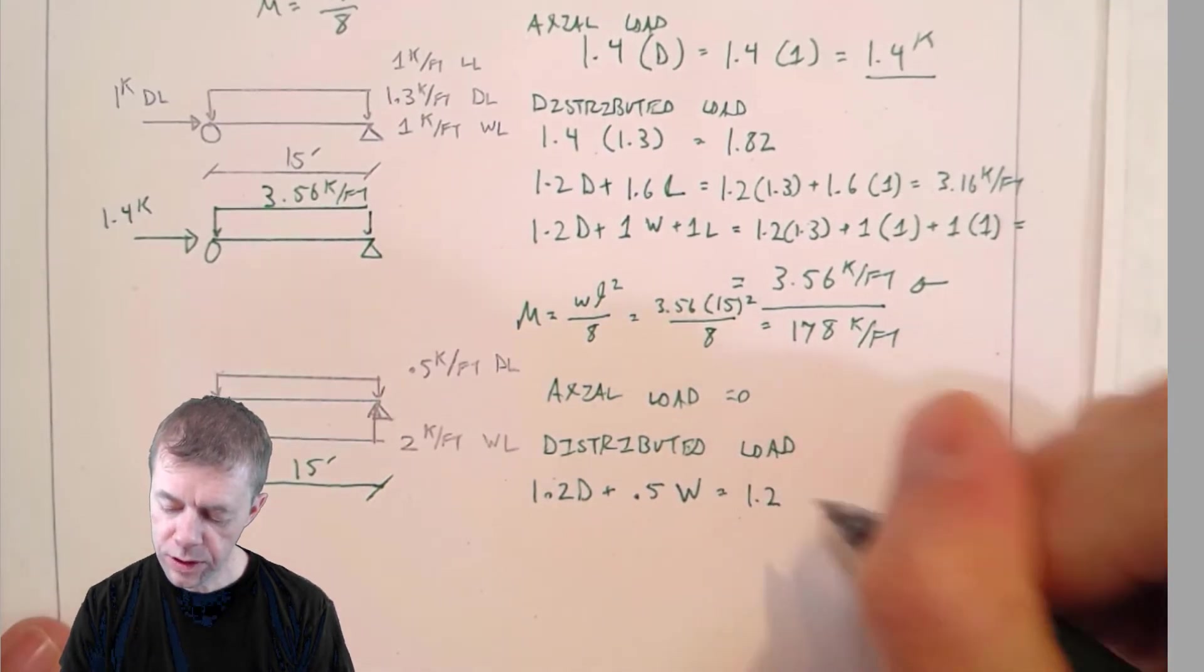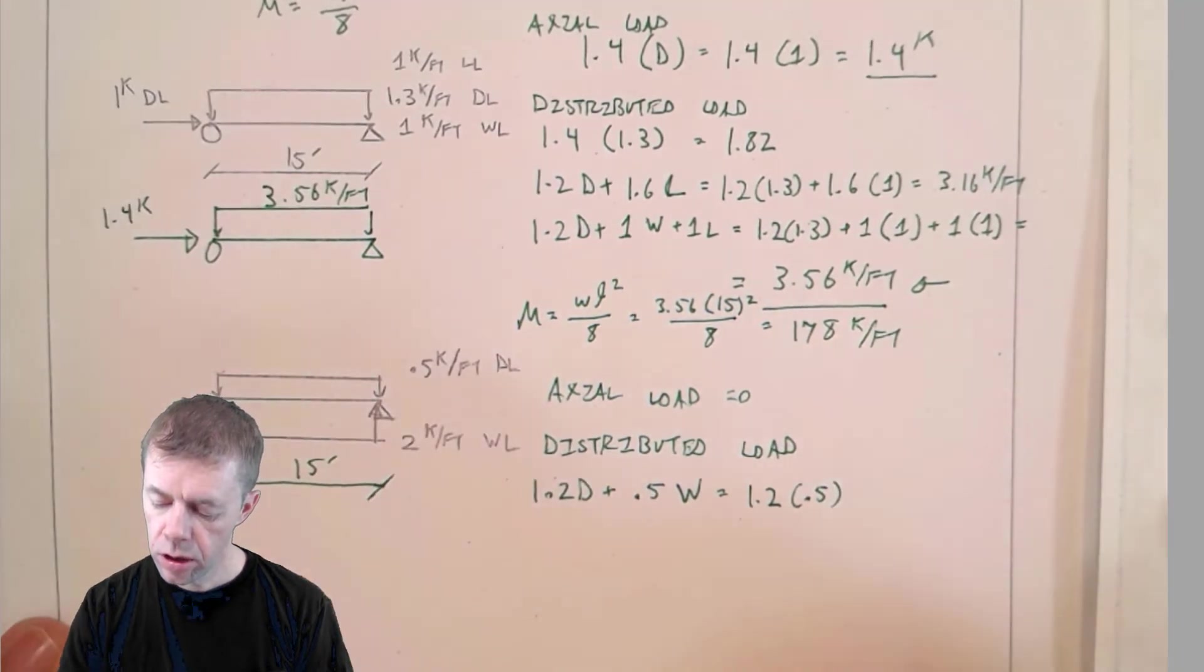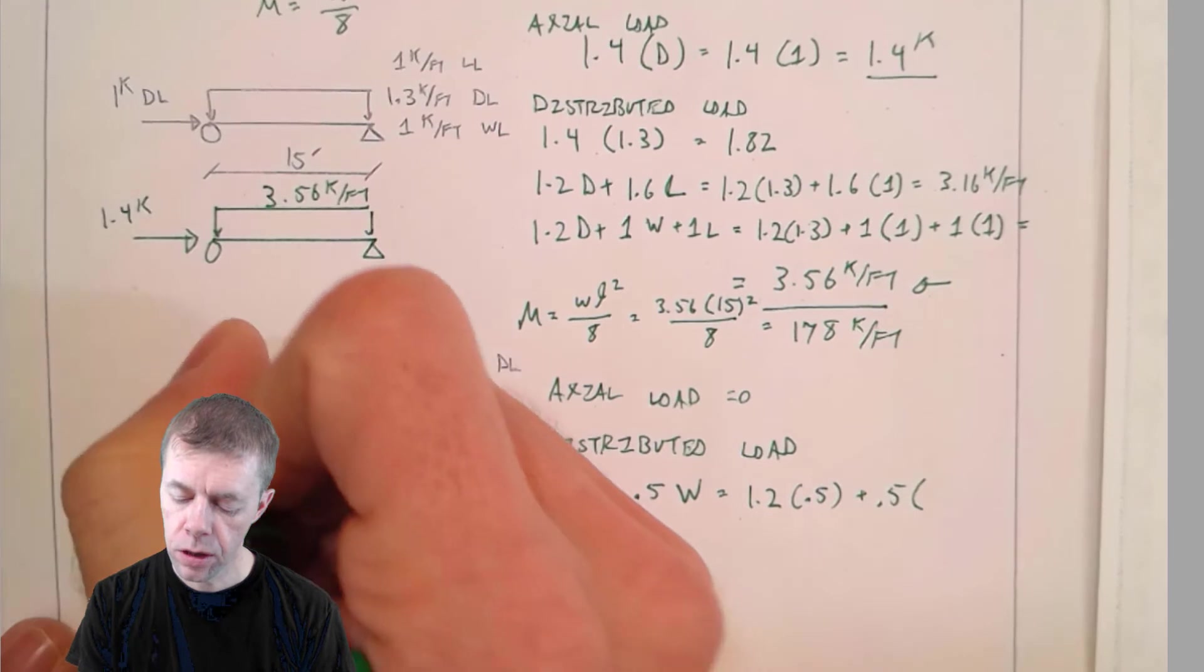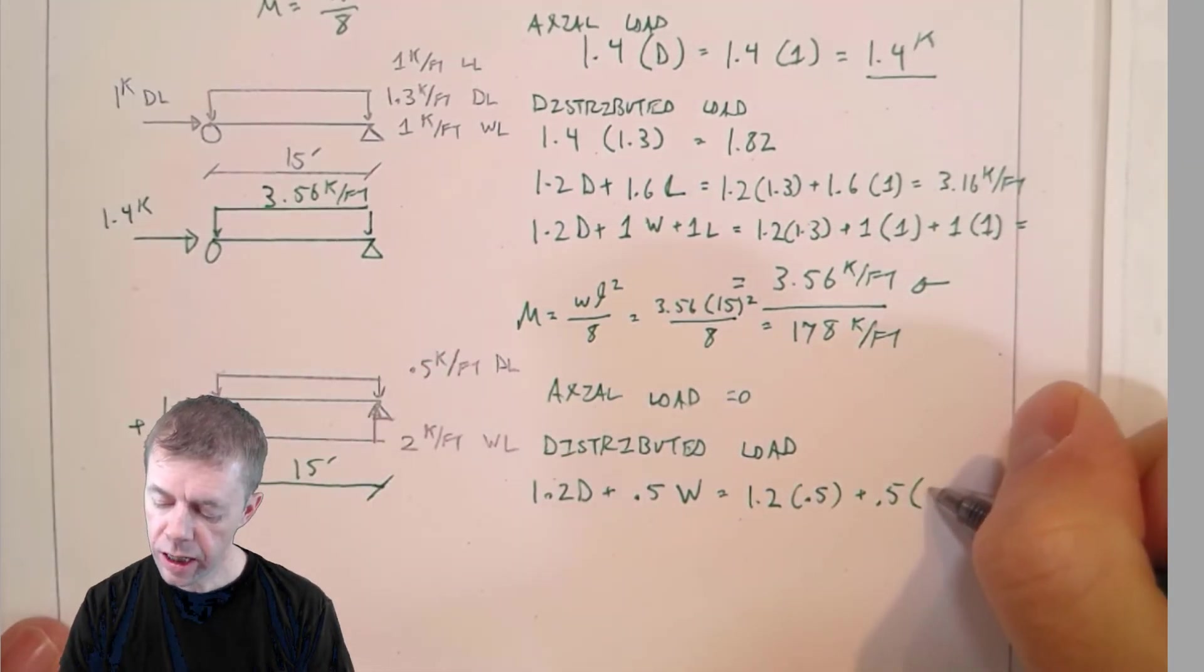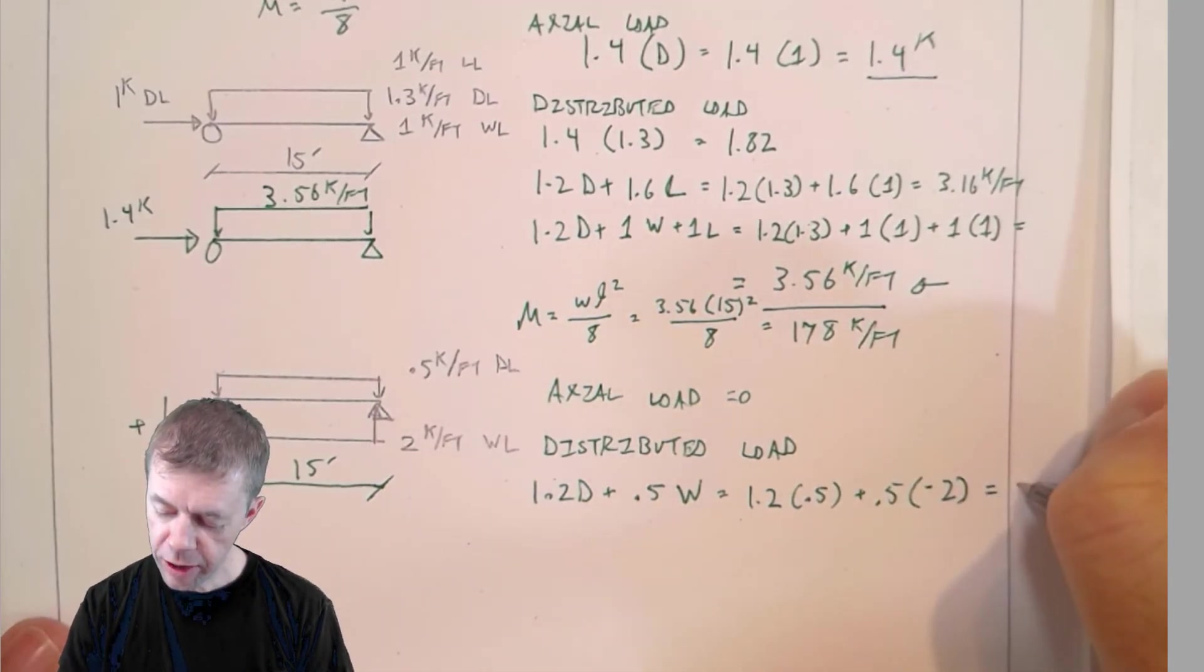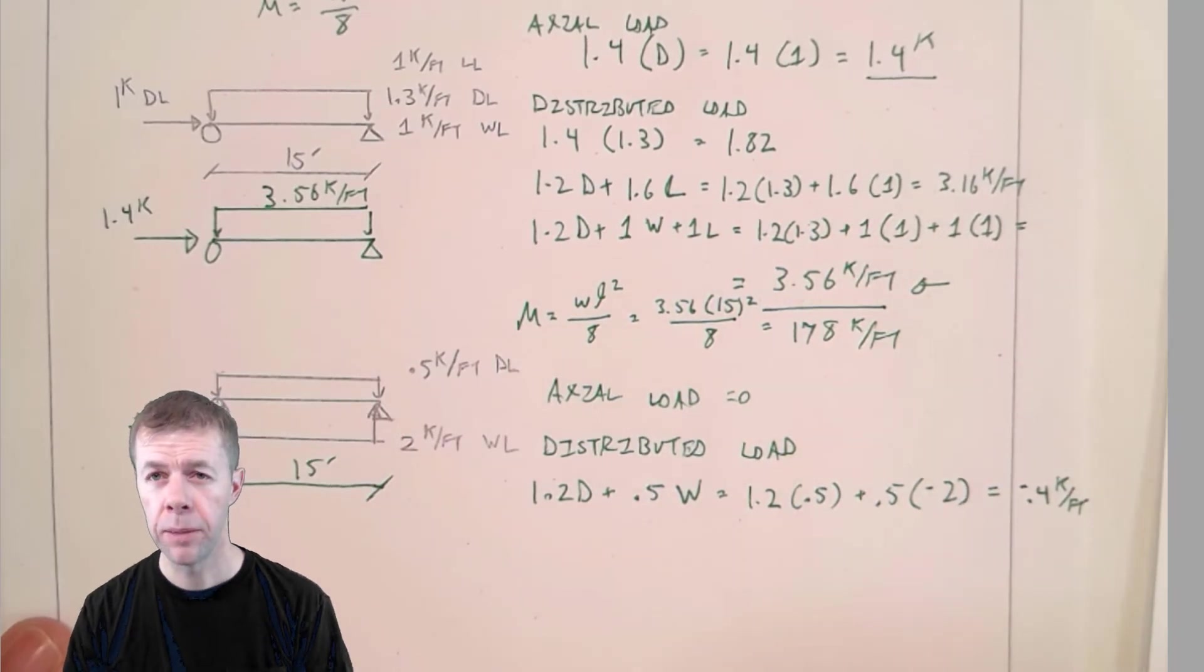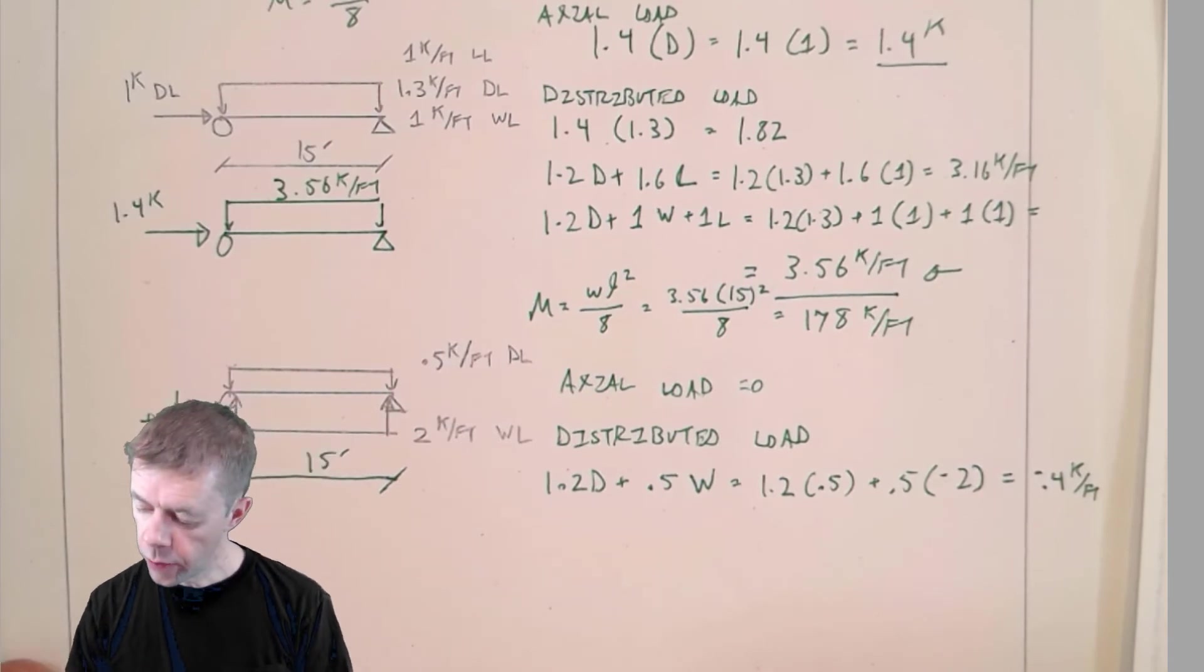We're going to take 1.2 dead plus 0.5 wind. So 1.2 times 0.5, that's my dead load, plus 0.5 times... whoa, my wind load is going in the opposite direction. Well, if this direction is plus, then the other direction must be minus. Negative 2 wind load. And if you solve that, you get negative 0.4 kips per foot.